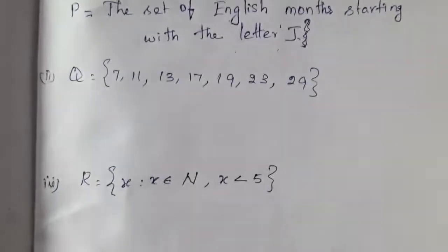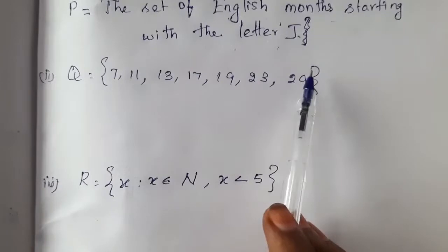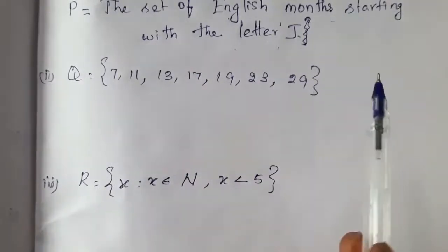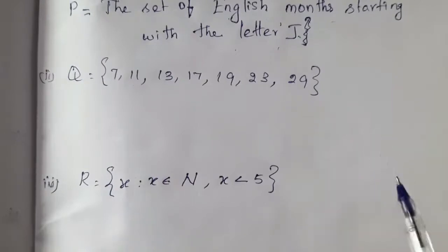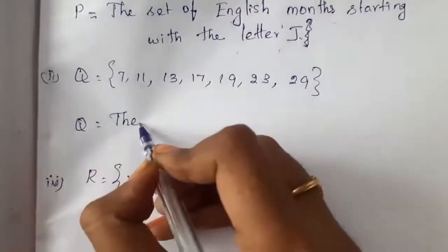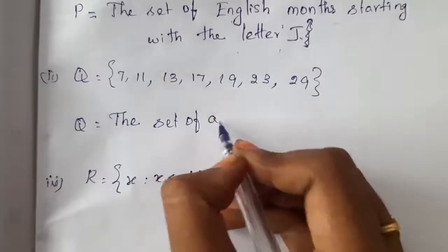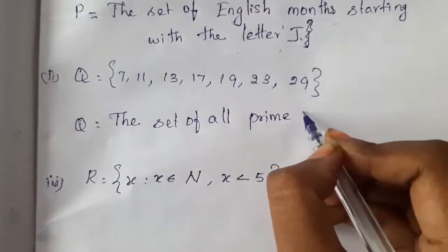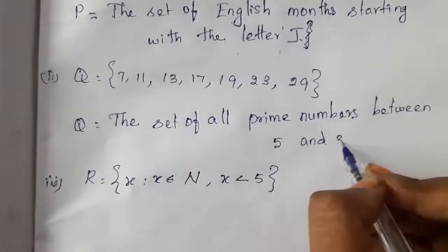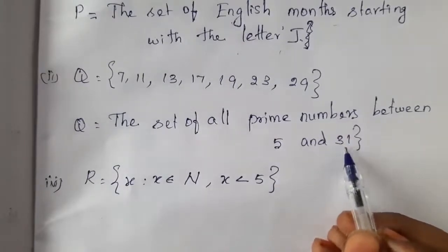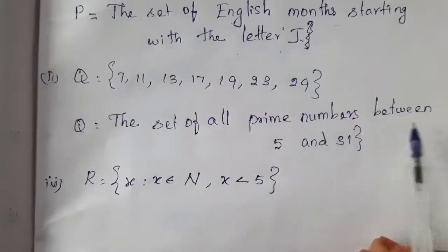Set Q = {7, 11, 13, 17, 19}. These are all prime numbers. A prime number has factors of only 1 and the number itself — no other factors. In descriptive form: Q = the set of all prime numbers between 5 and 23. We are not including 5 or the next prime after 19; in between those the prime numbers are 7 to 19. You can also write: the set of all prime numbers from 7 to 19.